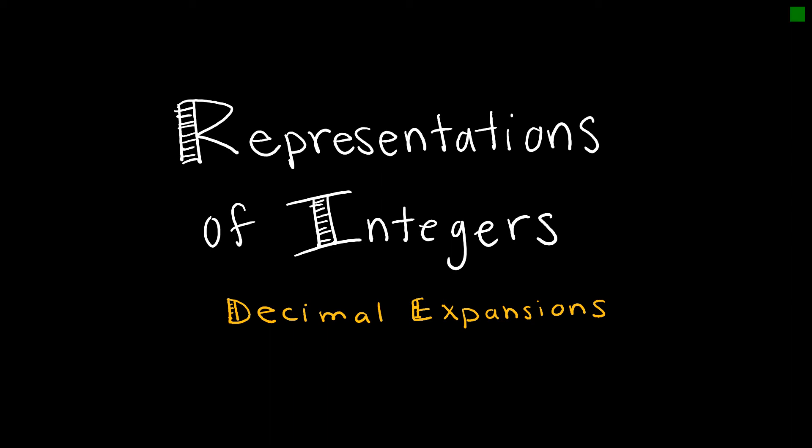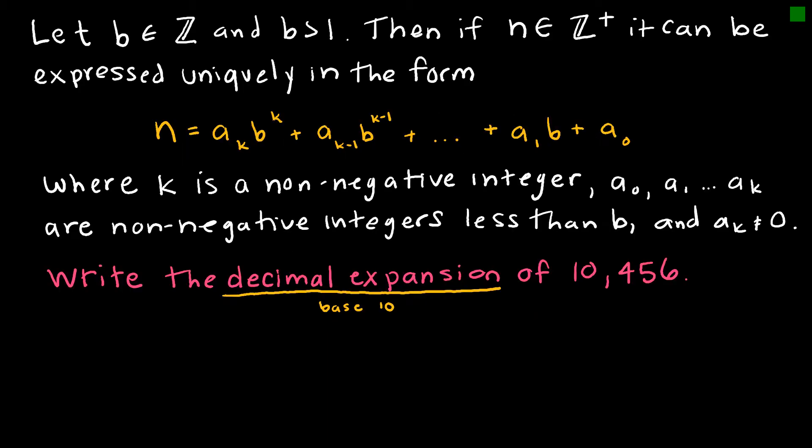Now that we've become familiar with different bases in terms of our numbering system, we want to look at being able to write values using different bases. In this first video of the series, we're going to look at decimal expansions. Decimal means a base 10 expansion. We have a theorem that says if b is an integer greater than one, then if n is a positive integer, it can be expressed uniquely in the form...